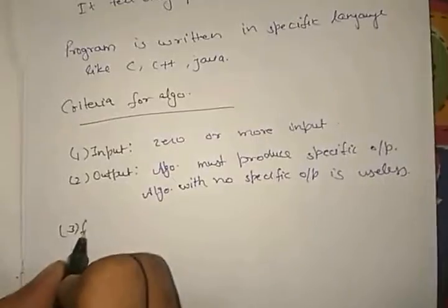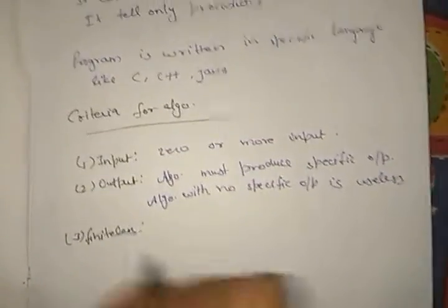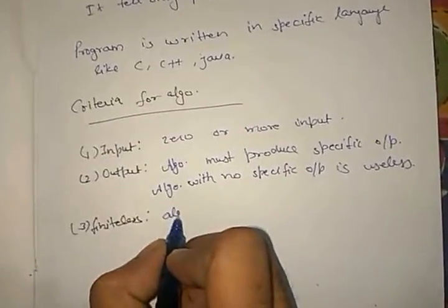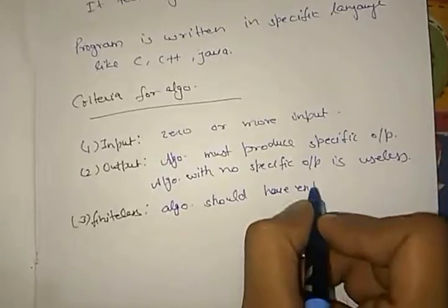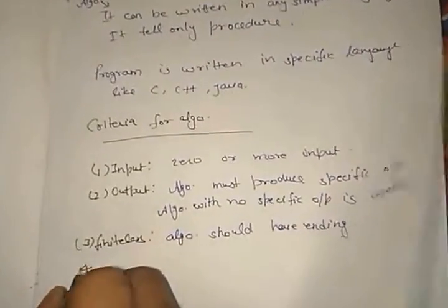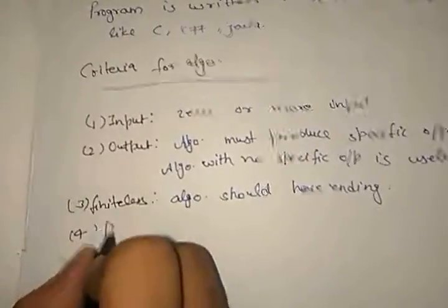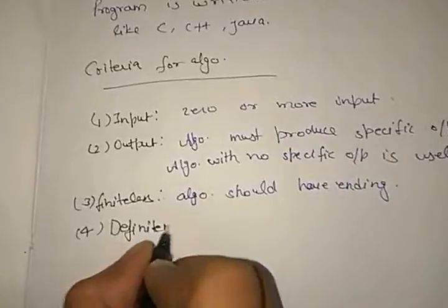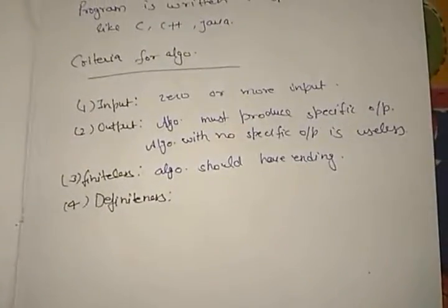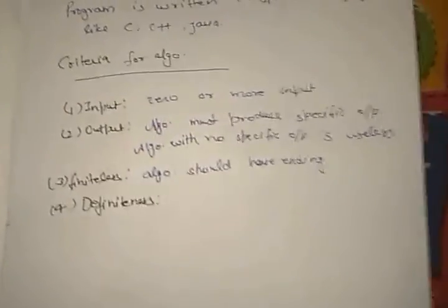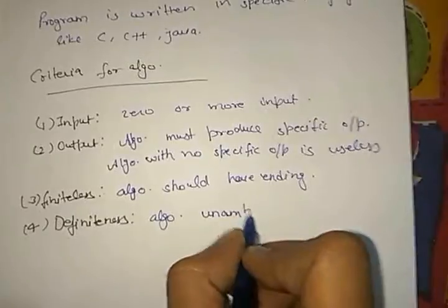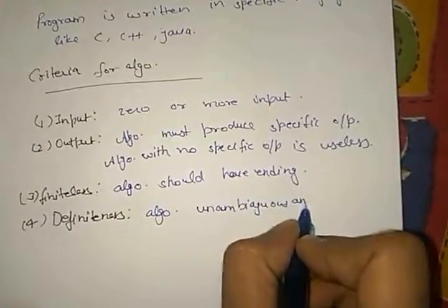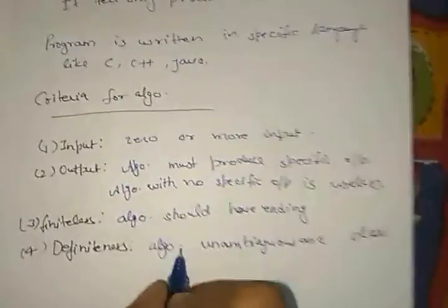The third criteria for an algorithm is finiteness — it means the algorithm should not contain an infinite loop; it must have an ending. The fourth criteria is definiteness — an algorithm should not produce an ambiguous or confusing meaning. It should be clear and unambiguous, producing only one meaning.